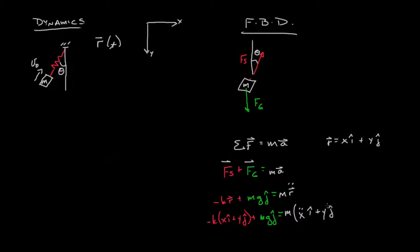We can use our simple trick of using a dot product to separate things into x and y components. In the x direction we have negative kx equals m x double dot. This should look really familiar and as a matter of fact you can probably write the solution right off the top of your head. x as a function of t is A cosine square root of k over m plus B sine square root of k over m t. Very simple.